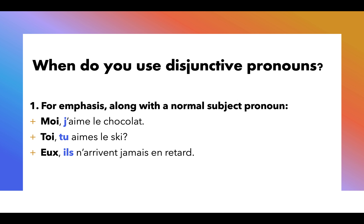The normal subject pronoun is in blue here. The sentence could exist really well without the disjunctive pronoun, which is the first word. I could just say j'aime le chocolat, but if I want to emphasize I'll say moi, j'aime le chocolat. I could say tu aimes le ski, but if I want to emphasize I go toi, tu aimes le ski — hey, do you like skiing? If I'm putting emphasis on you. Eux, ils n'arrivent jamais en retard — them, those guys, they never come late.